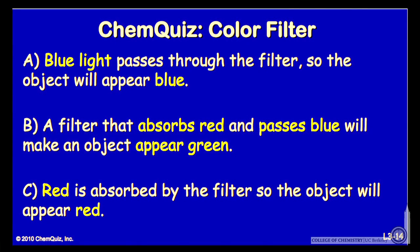Let's consider an argument for each of the possible answers. Answer A: blue light passes through the filter, so the object will appear blue. Answer B: a filter that absorbs red and passes blue will make an object appear green. Or Answer C: red light is absorbed by the filter, so the object will appear red. Think about those three possible solutions for a minute and make another selection.